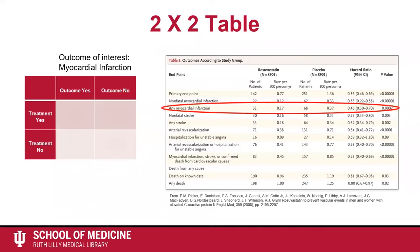If you look at the numbers generated in the study, you see that 31 of the patients who received the statin treatment experienced a myocardial infarction. So in the two-by-two table, 31 goes into the treatment yes, outcome yes square. If 8,901 patients received the statin and 31 of them had a myocardial infarction, how many patients did not have a myocardial infarction? You are correct if you answered 8,870. These are the people who received the statin treatment but did not have the outcome of interest. 8,901 minus 31 equals 8,870. That number goes into the treatment yes, outcome no square.